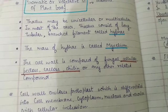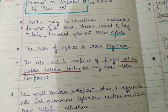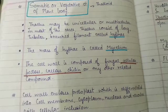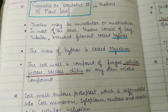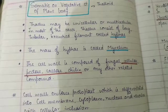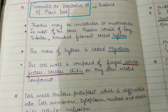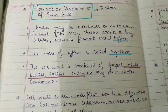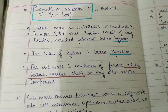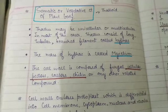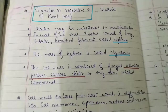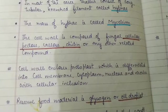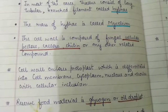The fungi cell wall is present and a true nucleus is present. What fungi lack is vascular differentiation. The cell wall in fungi is made up of fungal cellulose, pectose, callose, chitin, or any other related compound.